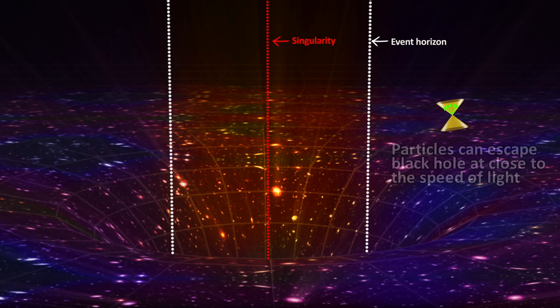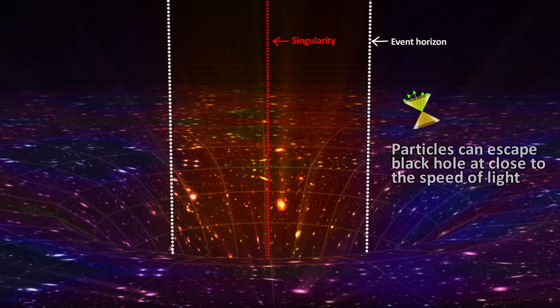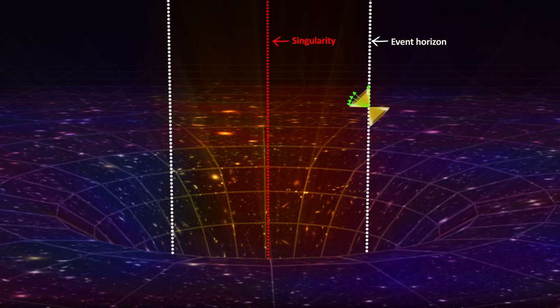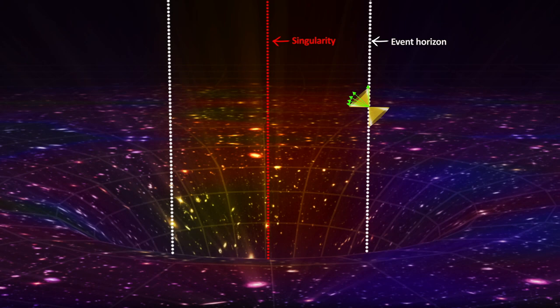However, once it enters the event horizon, there is no timeline which leads to the outside of the event horizon. There is no escape, even at the speed of light. The light cone of the object will no longer have any future world line to the outside, and it thus loses connection to anything outside the black hole.